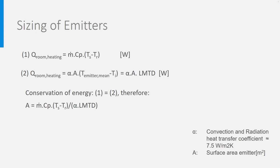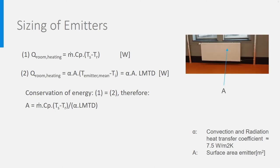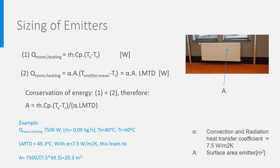The surface area A determines the size of the emitter, a radiator in our case, and therefore its costs. If we take again our example with a heating load of 7500 Watt and supply and return temperatures of 80 and 60 degrees, this leads to an LMTD of 49.3, leading to a surface area of 20 square meters.